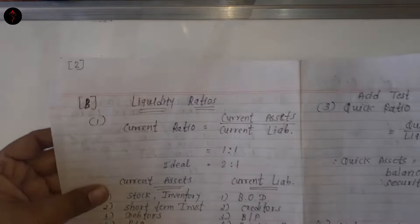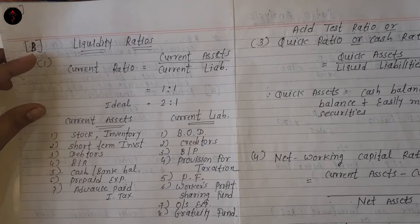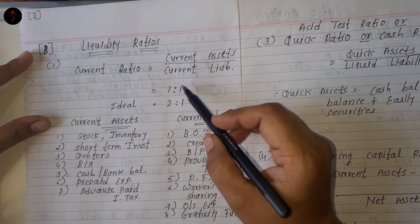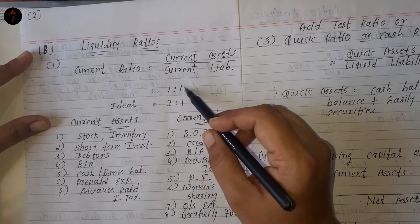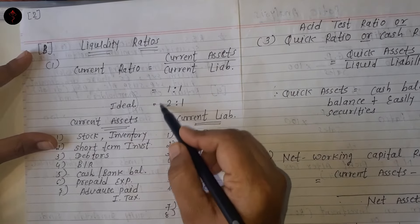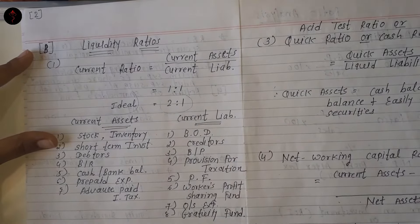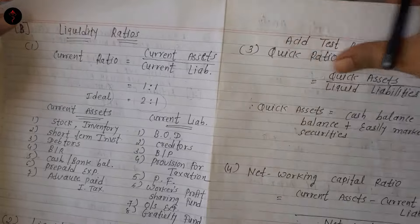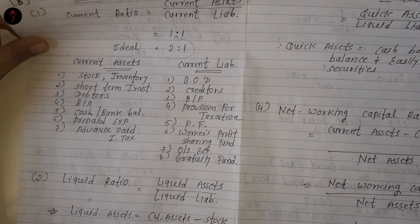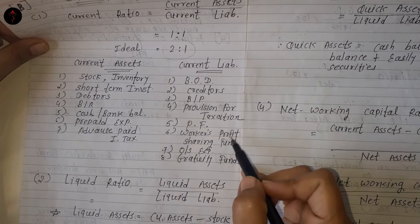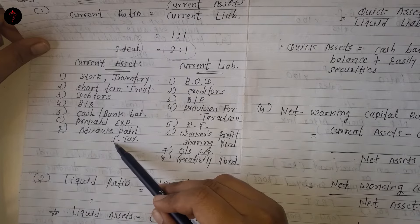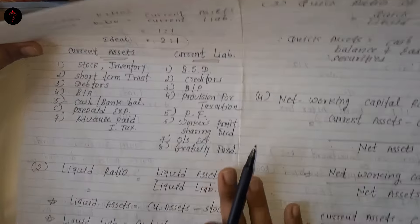Second है हमारा Liquidity Ratio. Liquidity ratio में पहला आता है current ratio — current assets divided by current liabilities. Answer is expressed as ratio, ideal is 2:1 — यानि आपकी assets आपकी liability से double हो, because obviously assets ज़्यादा हैं, that shows the good strength of your company. Current liabilities में work-in-profit sharing fund, outstanding expense, gratuity fund आते हैं, जबकि current assets में prepaid expense और advance paid income tax आते हैं.